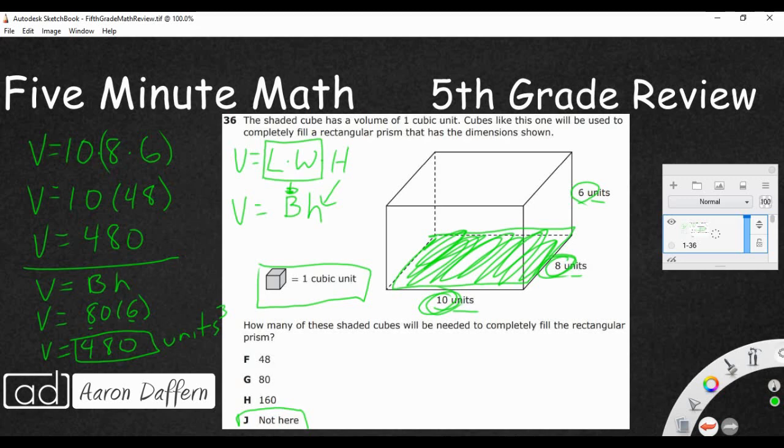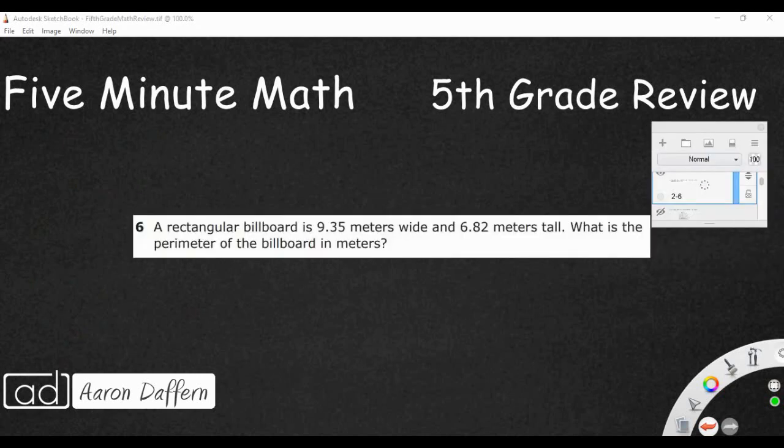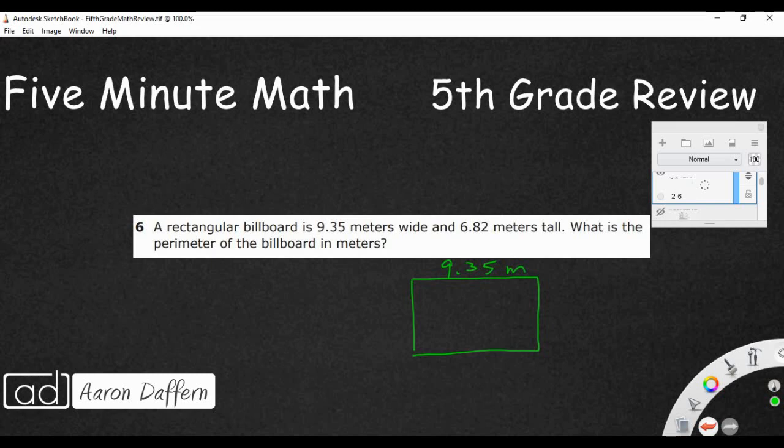So, that's where volume is different than area and perimeter. It's going to be 3 numbers you're multiplying. So, next we have a simple perimeter problem. And you notice there are no answer choices. So, this is going to be a free response answer. So, let's just go ahead and draw a rectangle just to help us. So, we've got 9 and 35 hundredths meters as our width. We've got 6 and 82 hundredths meters as our height.